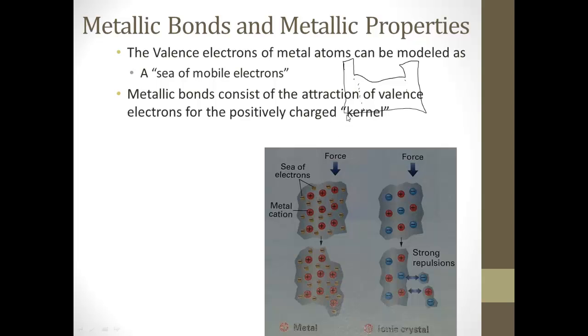And kernel's kind of in quotes because it's the nucleus and the non-valence electrons. So it's pretty much going to be all the electrons but these two. So even though there's a lot of negatively charged electrons, since there's pretty much always two more protons than the electrons in the kernel, those valence electrons are attracted to that kernel.